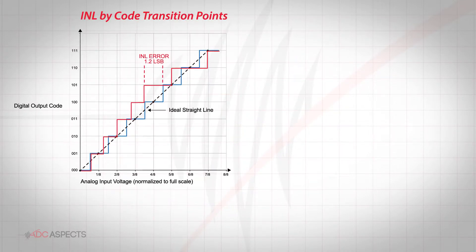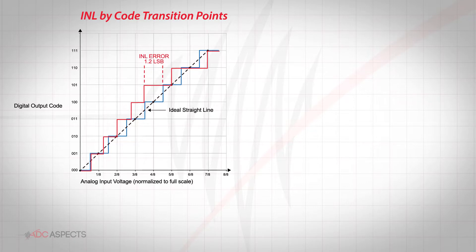INL is the integral of the DNL errors. Thus, the INL error at any given point in an ADC transfer function is the accumulation of all previous DNL errors. INL describes the deviation of the actual ADC transfer function from the ideal straight line.